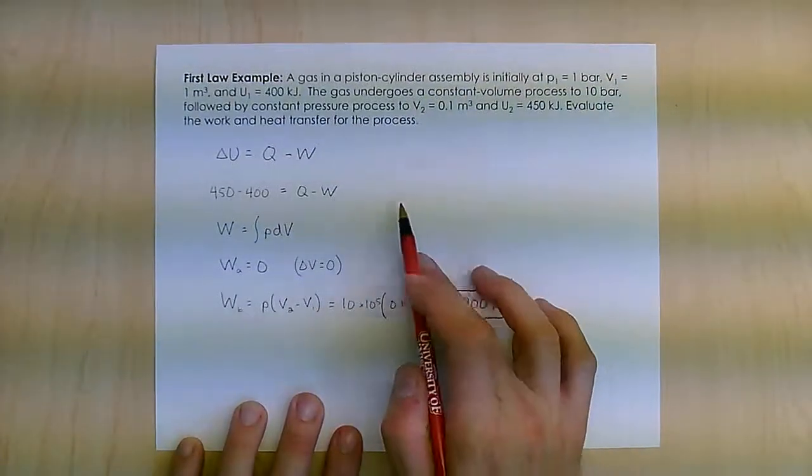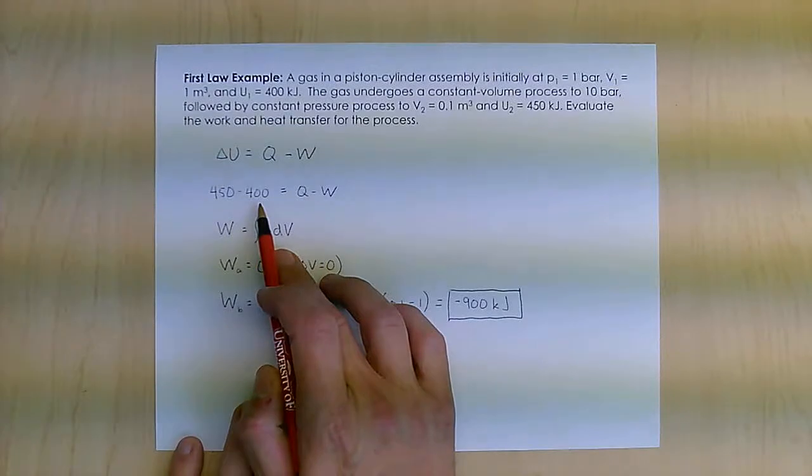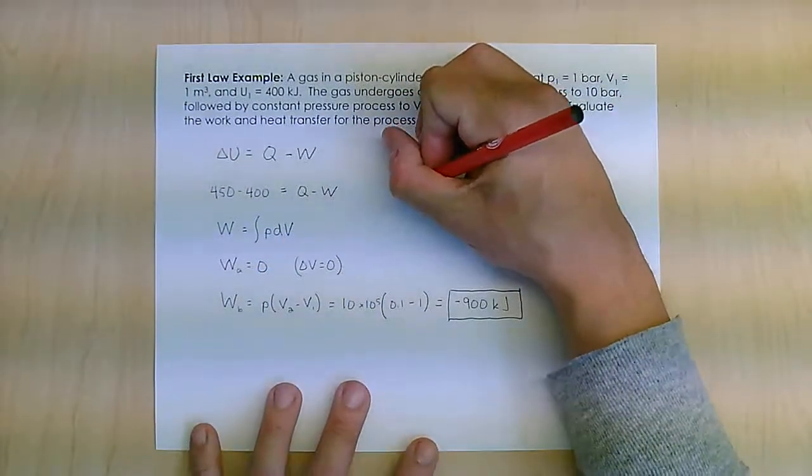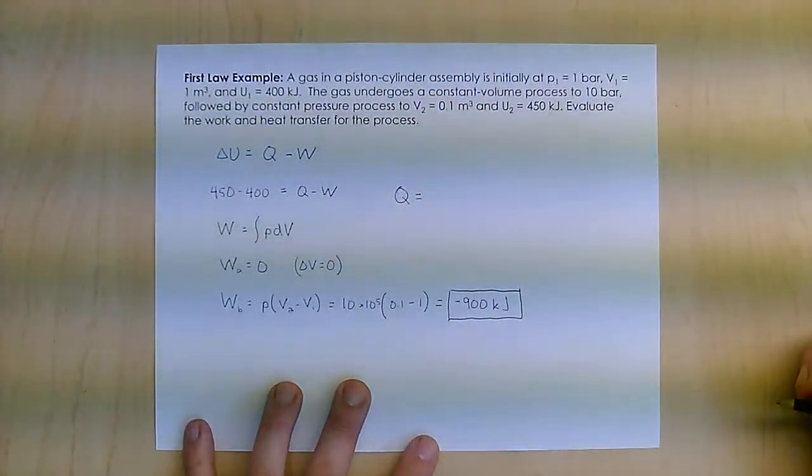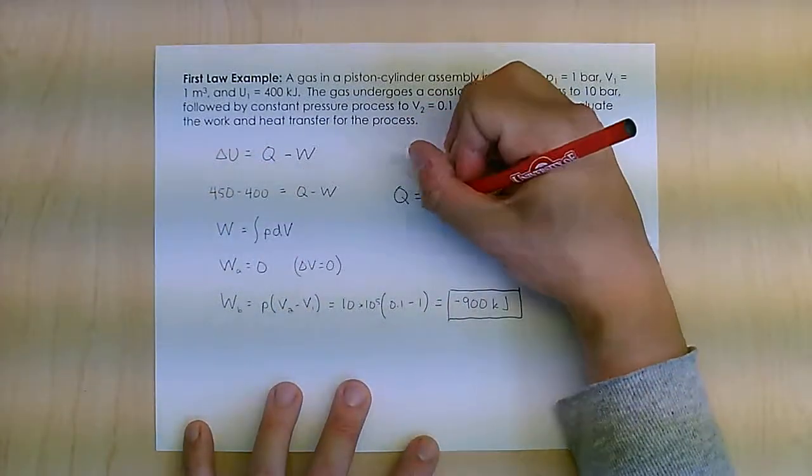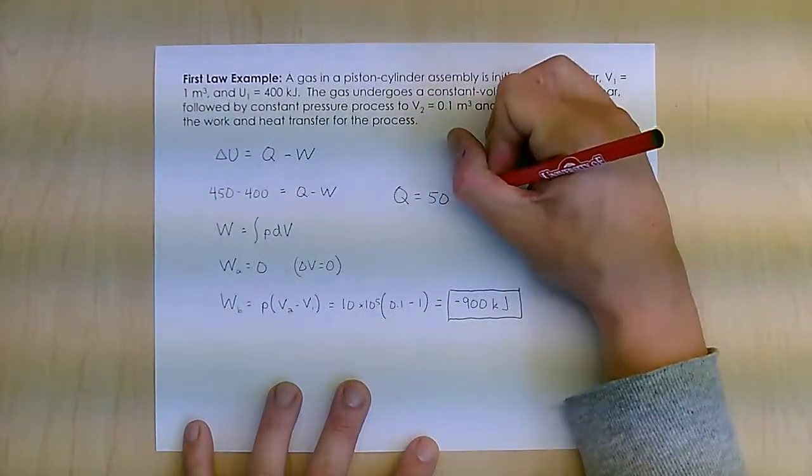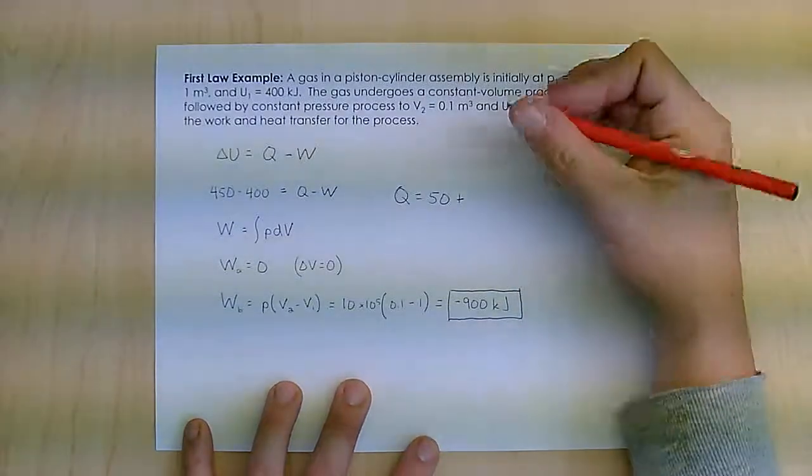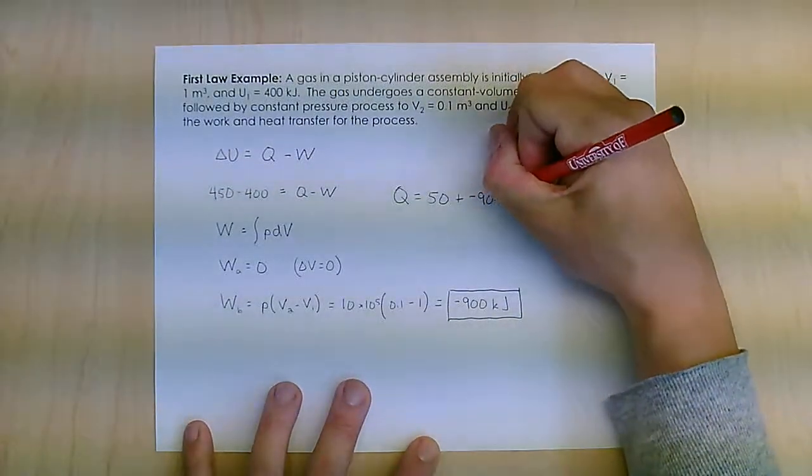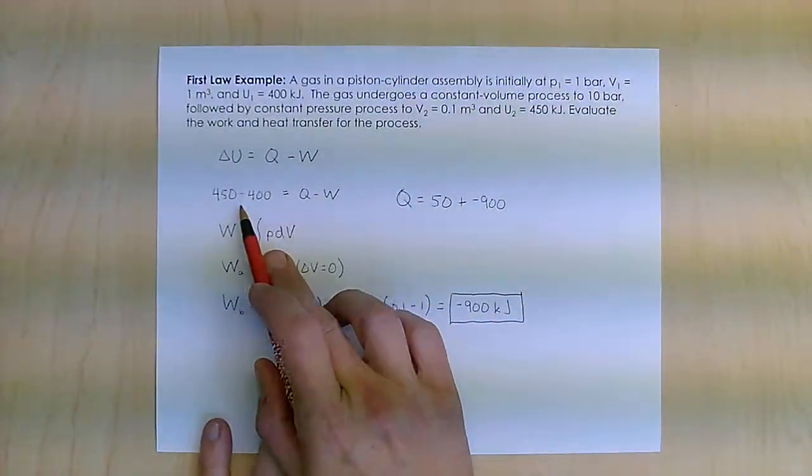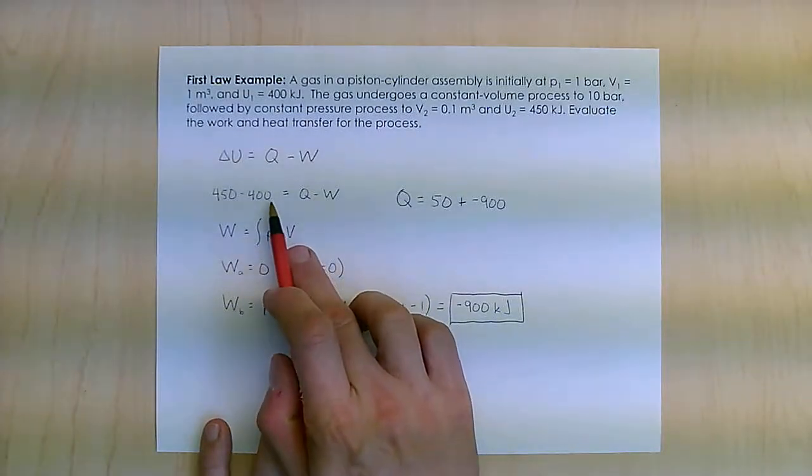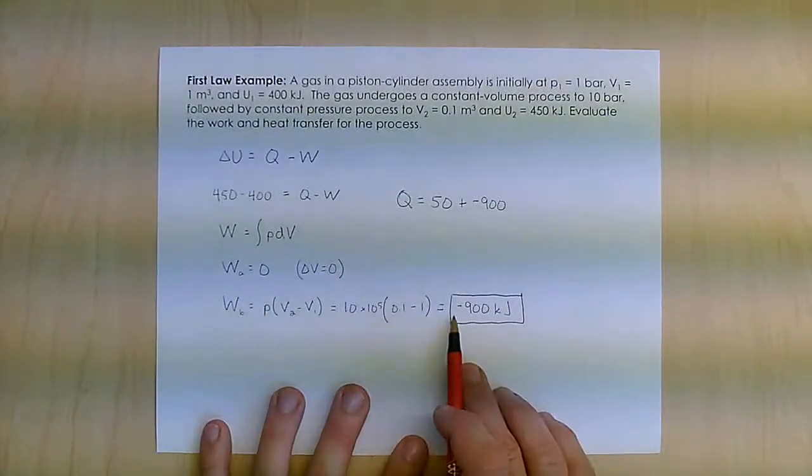To find the heat transfer, I go back to my first law equation. Q equals 50 plus this negative 900. I get that by rearranging the equation. I got 50, bring negative W over, it's positive W but negative here.